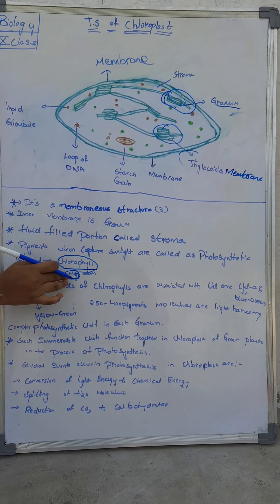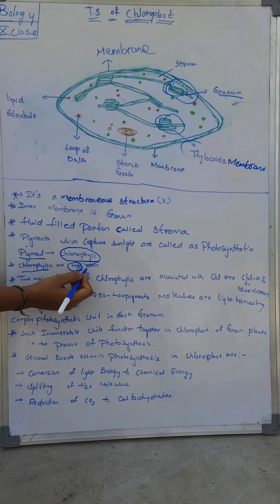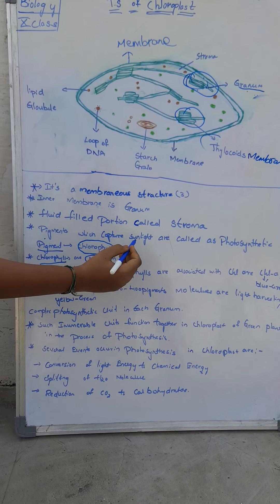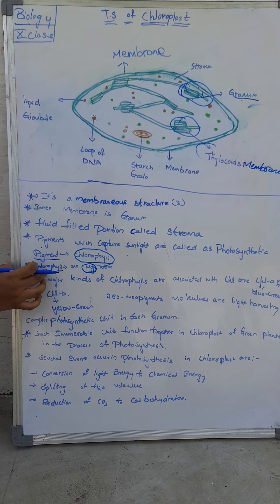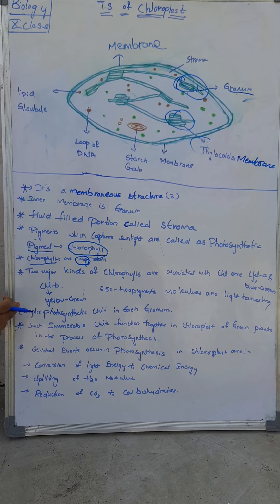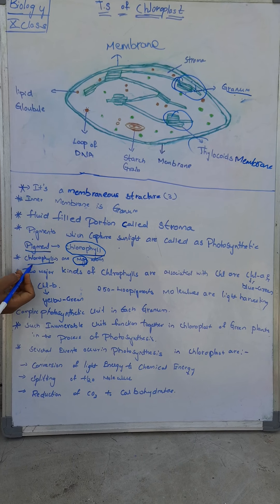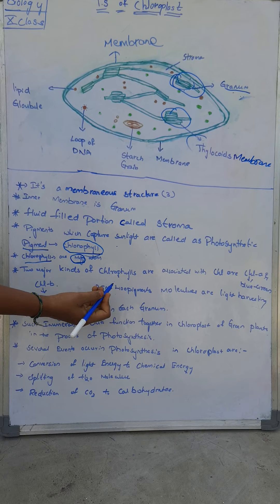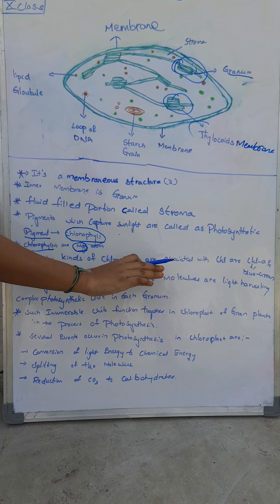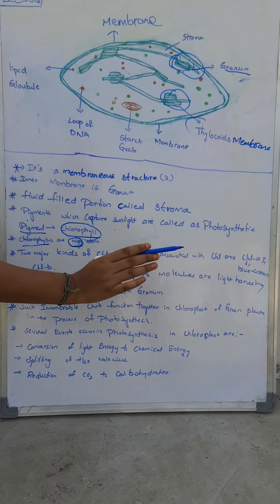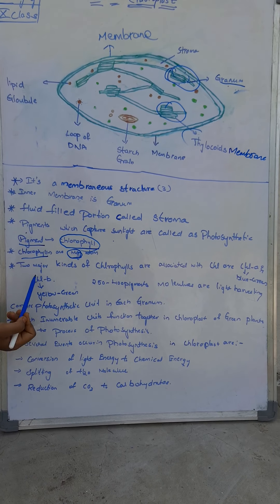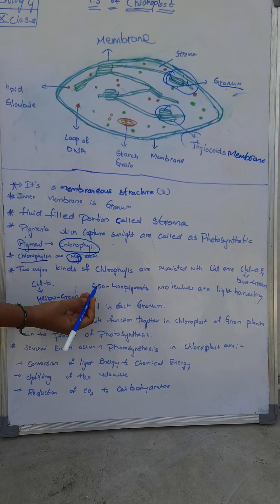Just as the human body has blood, which contains hemoglobin with iron, in the same way chlorophyll pigment consists of magnesium atoms. There are two major kinds of chlorophyll: chlorophyll a, which is blue-green in color, and chlorophyll b, which is yellow-green in color.